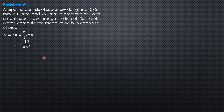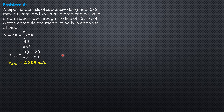For the 375 mm diameter pipe, velocity is 4 times 0.255 over pi times 0.375 squared. The mean velocity for the 375 mm size pipe is 2.037 meters per second.